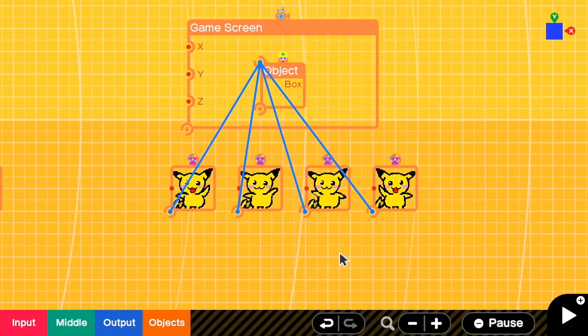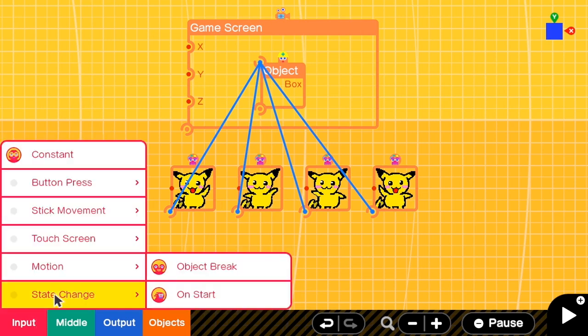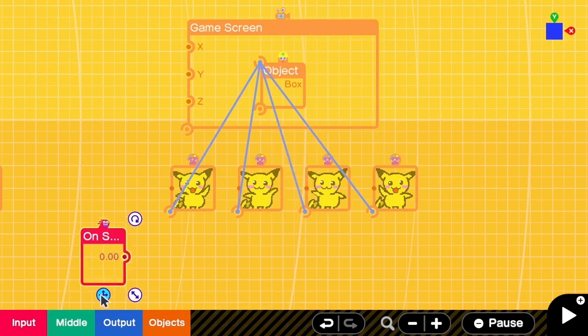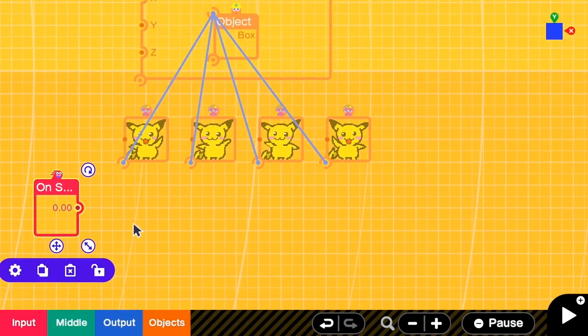First of all, I have to tell when I should start animating the Pikachu. So I need to get the on start signal from the on start nodon. And when I have received the on start signal, I need to start the timer.